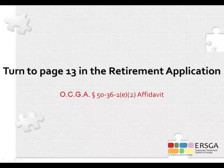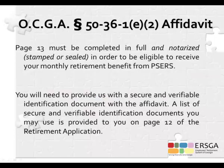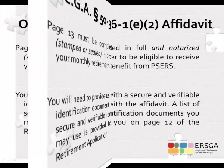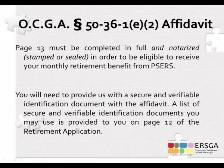Turn to page 13 in your retirement application. Page 13 must be completed and notarized to be eligible to receive a monthly retirement benefit. Because PSERS must have the original notarized affidavit, you may not fax or email it. Along with the affidavit, you must provide a copy of a secure and verifiable document for identification purposes. A list of acceptable documents is provided on page 12 of your retirement application.